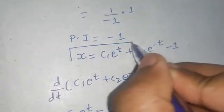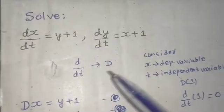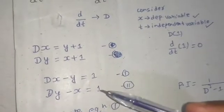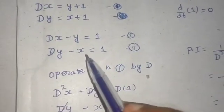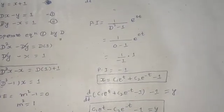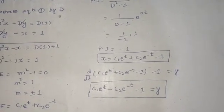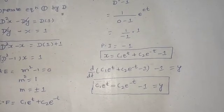So we have found both x and y. To recap: we used the D operator with x as dependent and t as independent variable, formed two simultaneous equations, operated the first by D to eliminate y, and solved the resulting linear ODE with constant coefficients. Once x was found, y followed directly. I hope you enjoyed this question — thanks and have a very nice day!